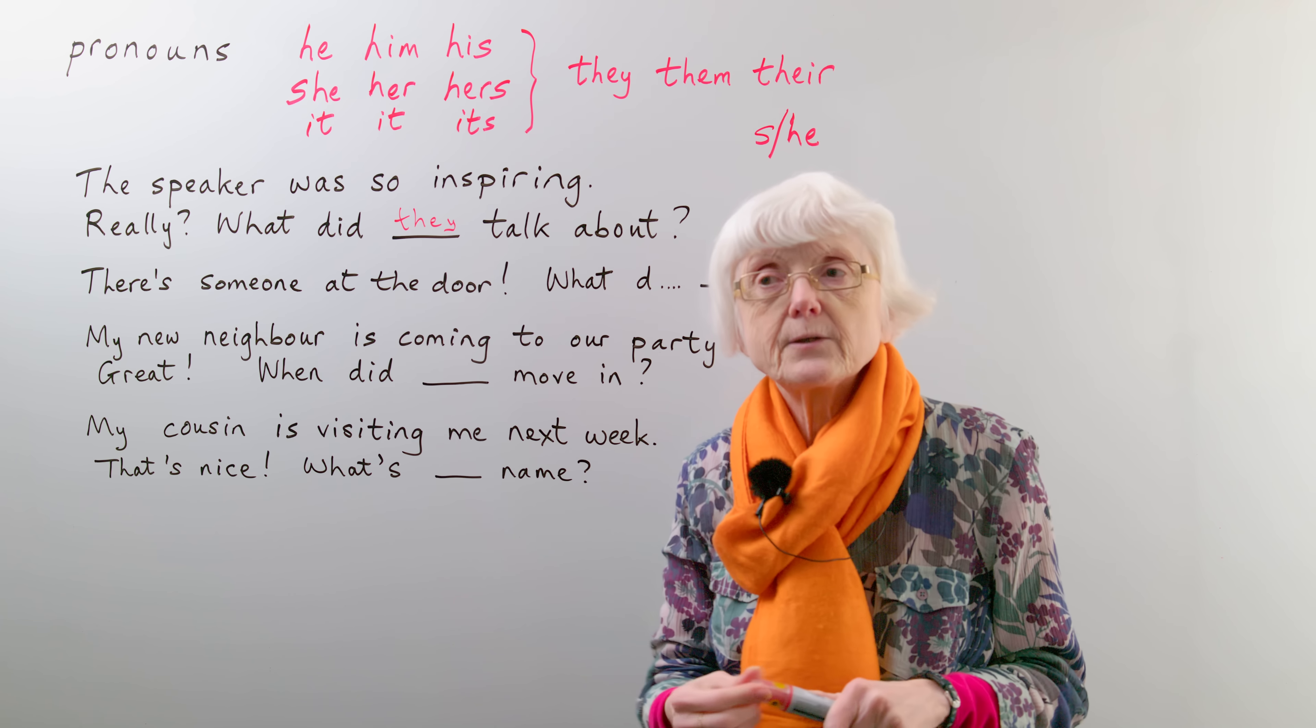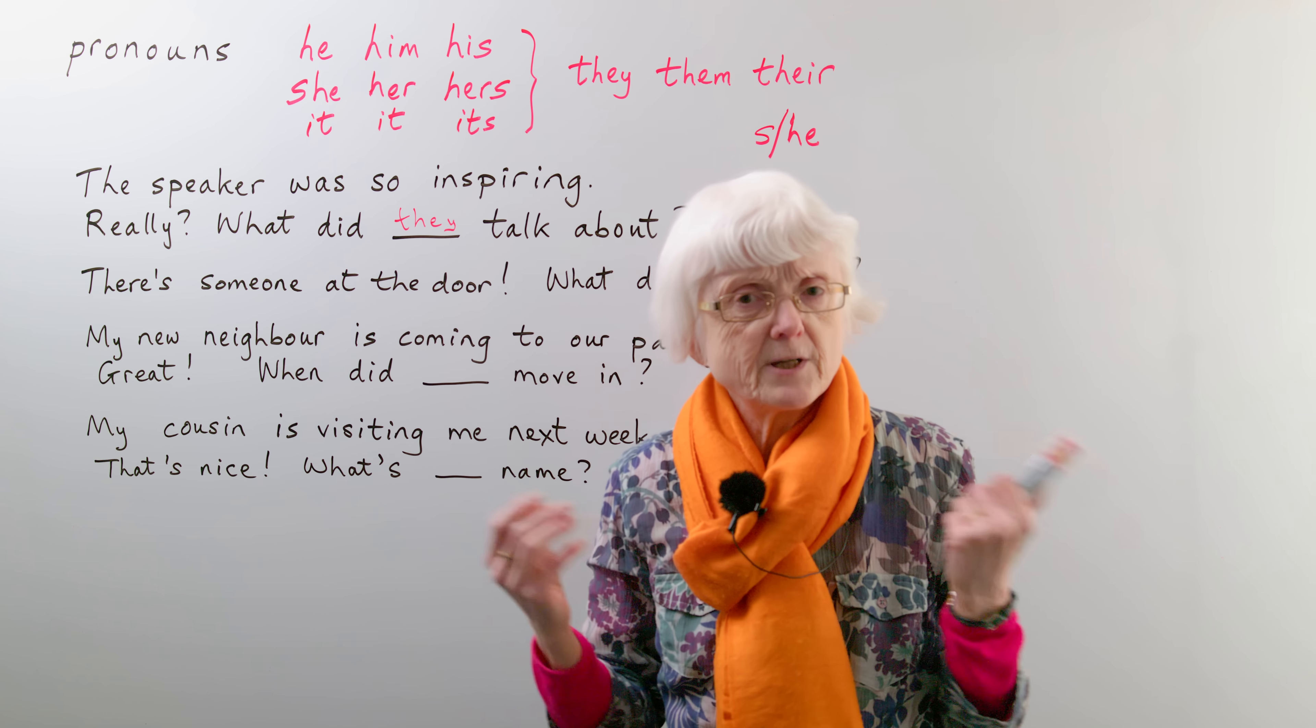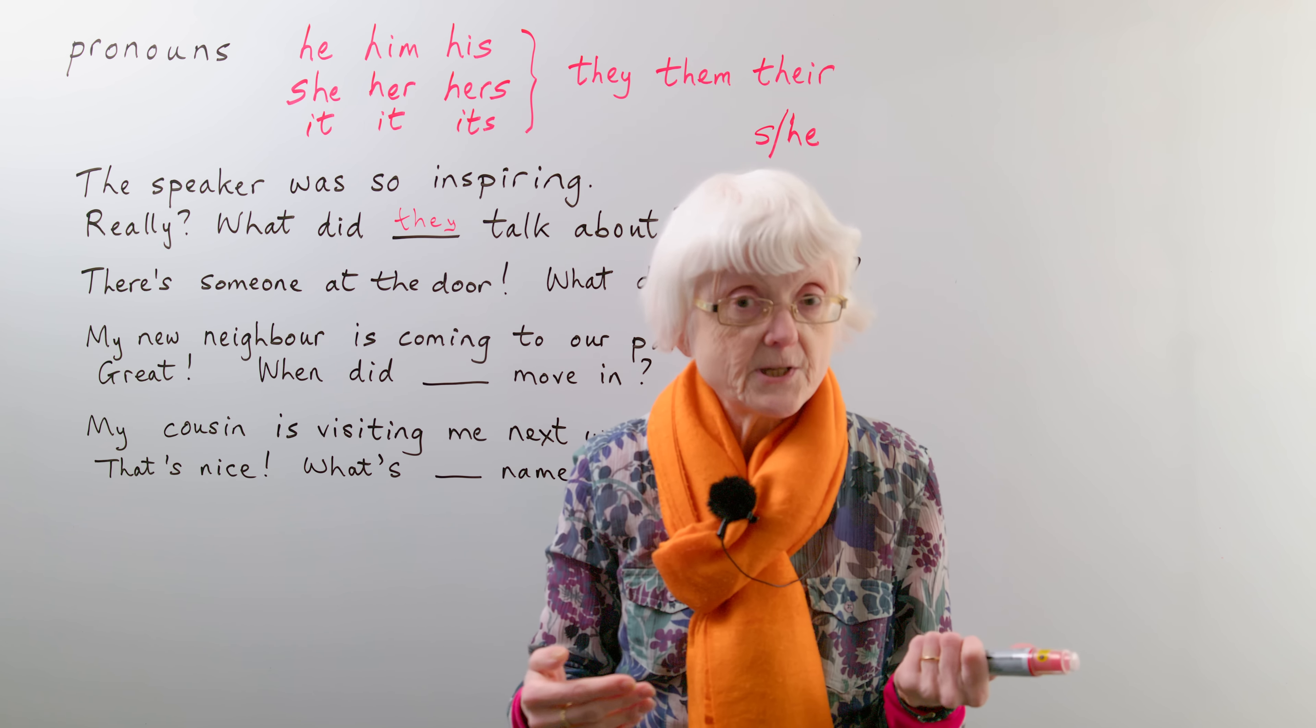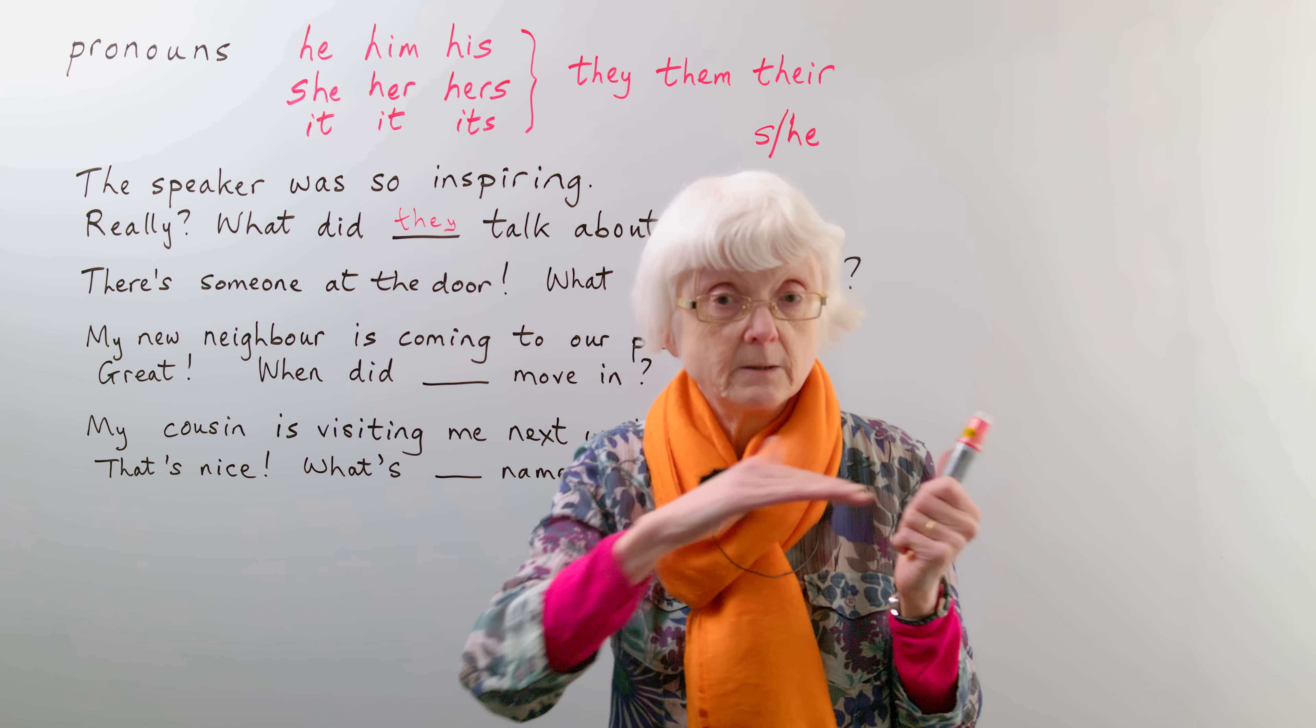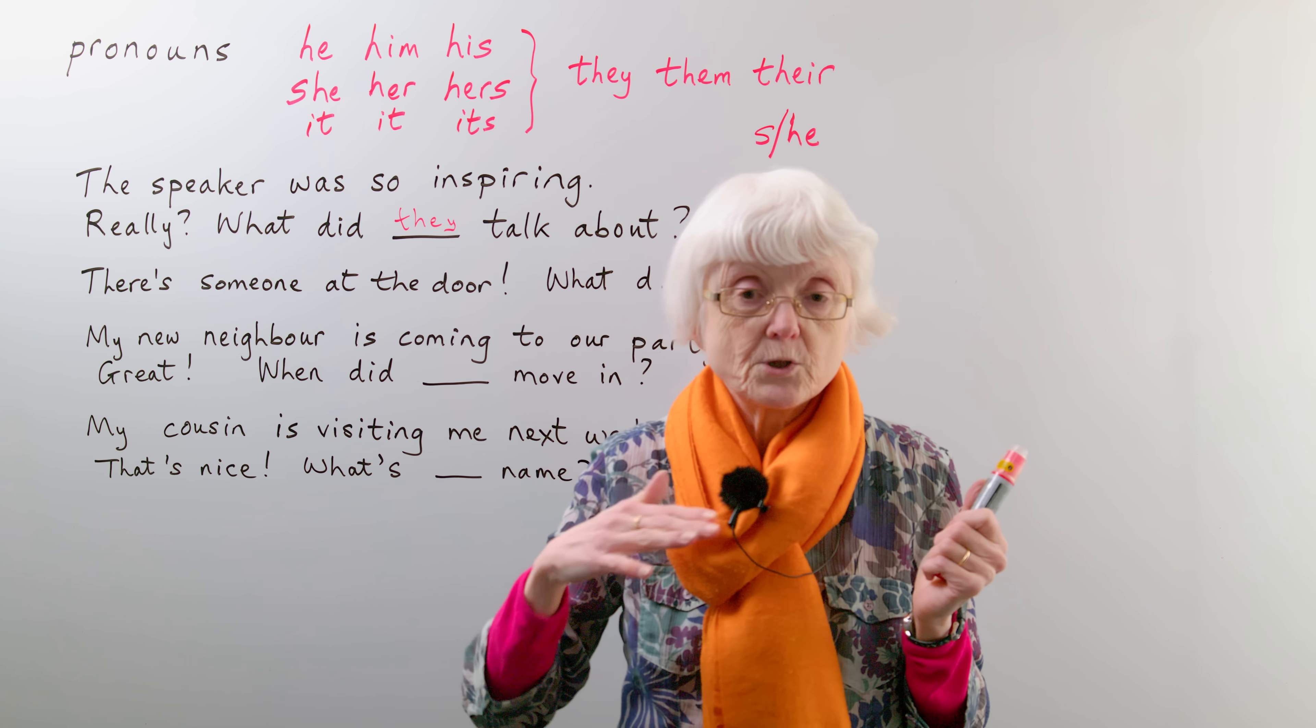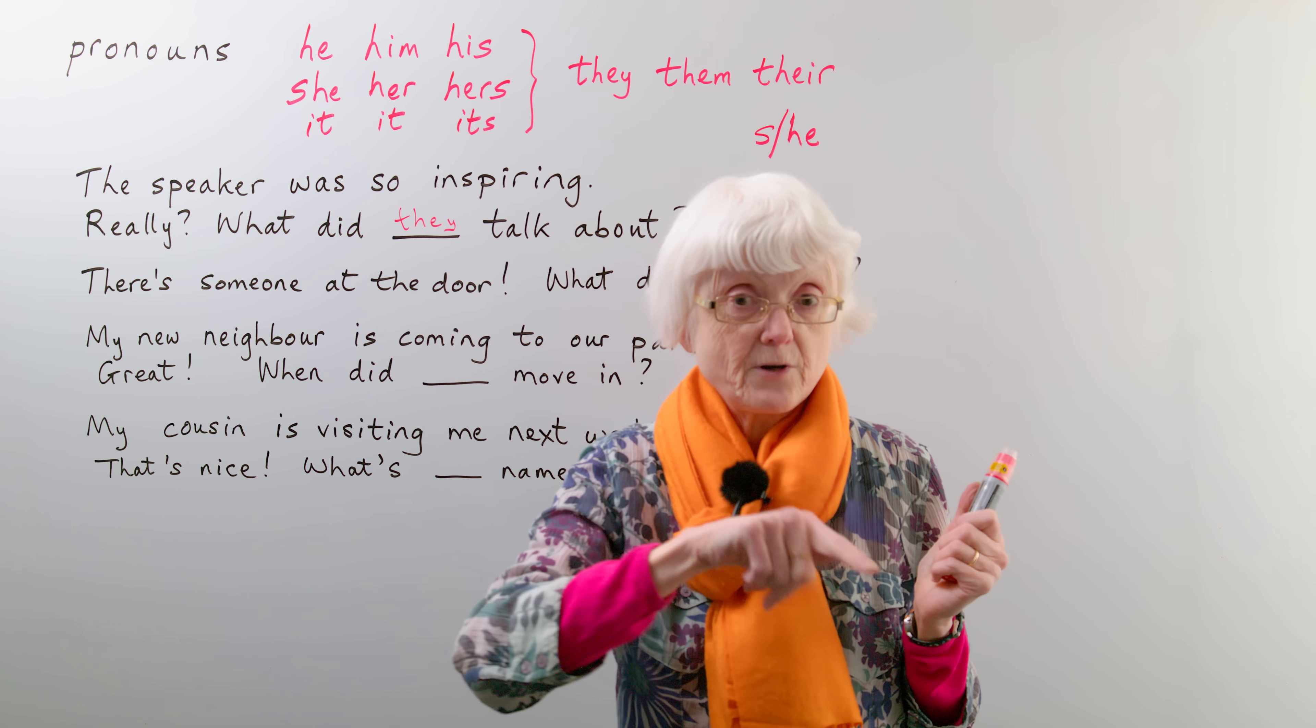And then there's another thing that's happened quite recently. Some organizations, I think, especially charities and NGOs. When people send emails, they put their name at the bottom and probably their job title, and then they've started putting how they want to be referred to. So they could put Jane Smith, volunteer manager, she stroke her, because Jane is a woman's name.